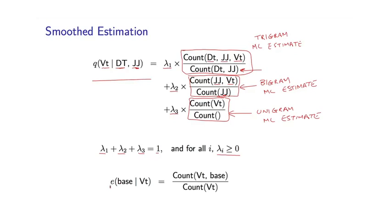Okay, so secondly we've got to consider these emission parameters. For example, e of base given vt is the probability that the tag vt emits the word base. And again, we can derive maximum likelihood estimates that take a very intuitive form. So on the denominator, I have the number of times I've seen the tag vt.